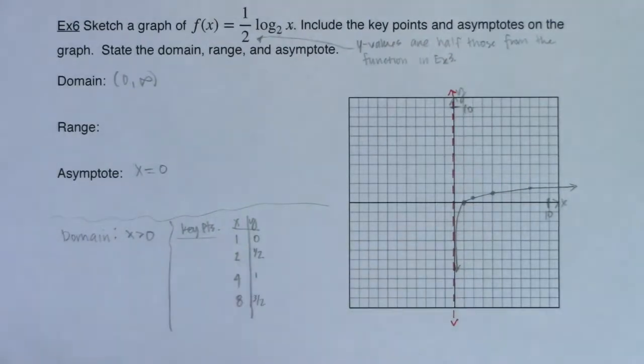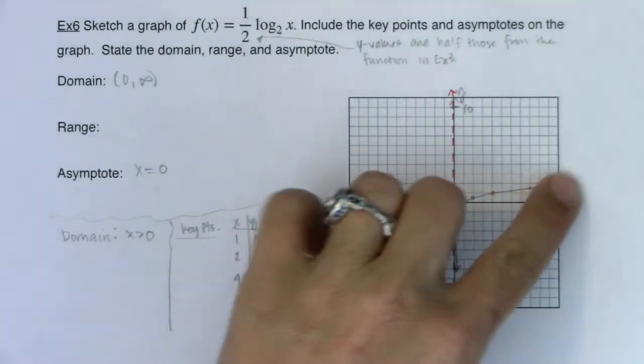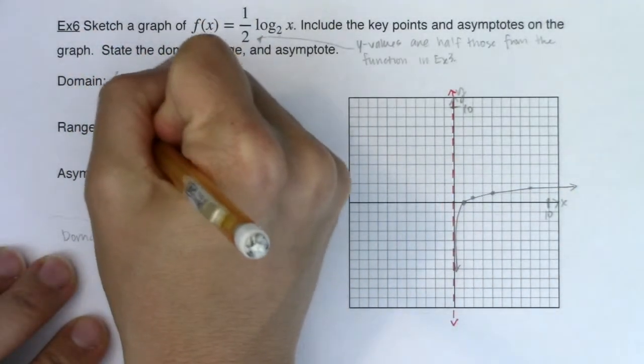But at any rate, there we go. I can see my range goes from all the way down to all the way up, even if that up is pretty darn slow. So there's my range.